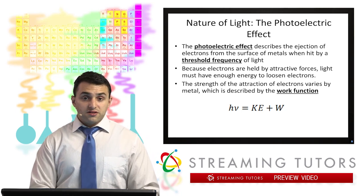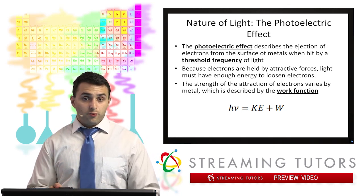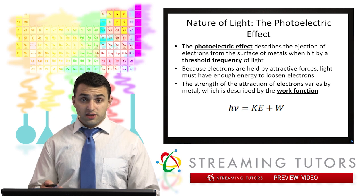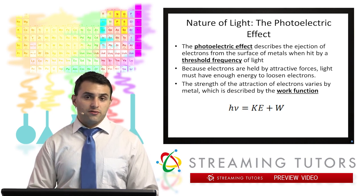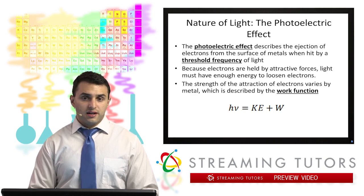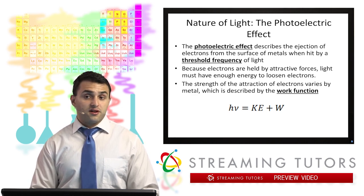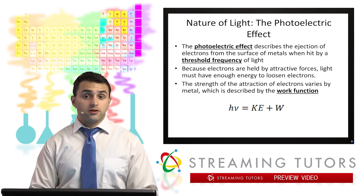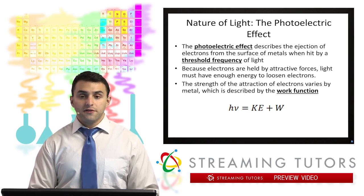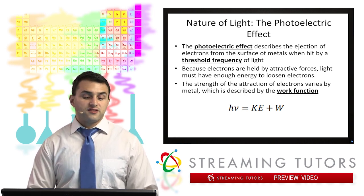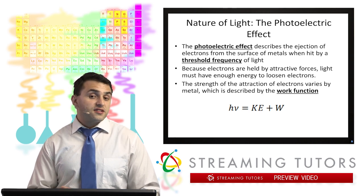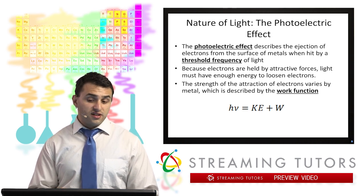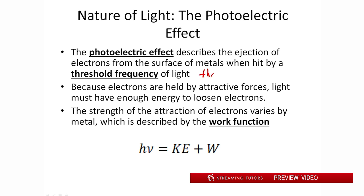All right, we're going to switch gears a little bit now that we understand the energy of waves, how to look at them via wavelength and frequency and their speed. And we're going to look at the nature of light. Now, back in the early 1900s, Einstein did experiments on the photoelectric effect. This is in fact what he won the Nobel Prize in Physics on. What the photoelectric effect is, is just, it's the ejection of electrons from a metal when it's hit by a certain threshold frequency of light. And since we're looking for a threshold frequency, we could also say that it's a threshold energy as well.